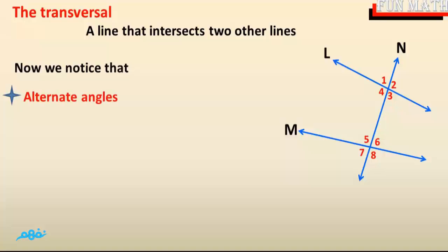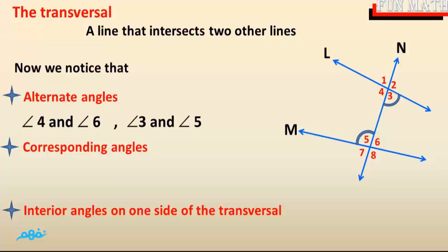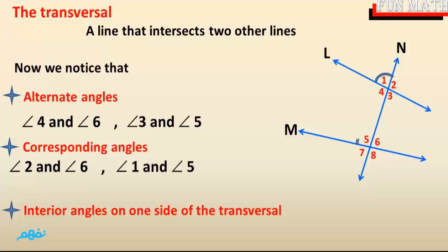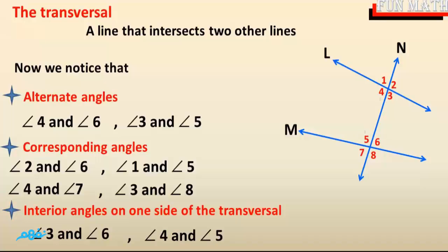We note three types of angle pairs formed: pairs of alternate angles, pairs of corresponding angles, and pairs of interior angles on one side of the transversal. Pairs of alternate angles are formed such as angle 4 and angle 6, and angle 3 and angle 5. Pairs of corresponding angles are formed such as angle 2 and angle 6, angle 4 and angle 7, and angle 3 and angle 8. Pairs of interior angles on one side of the transversal are formed such as angle 3 and angle 6, and angle 4 and angle 5.